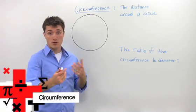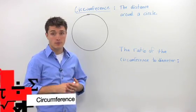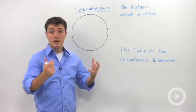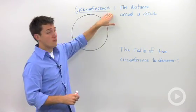One of the ways we can separate circles is by talking about their circumference. Different size circles have different size circumferences. But what is circumference?